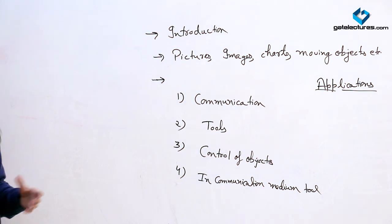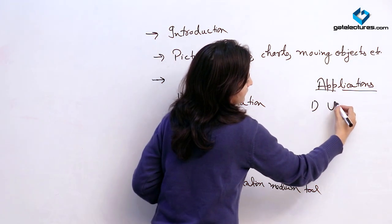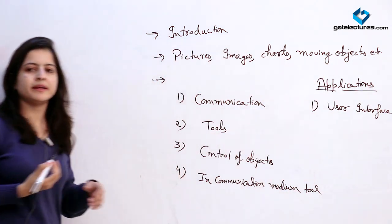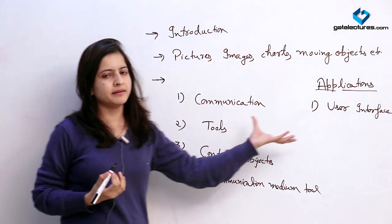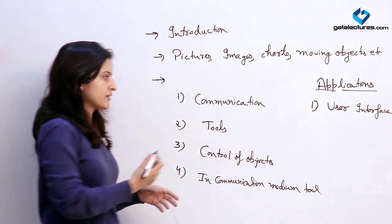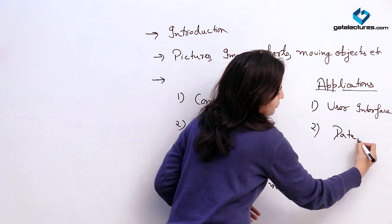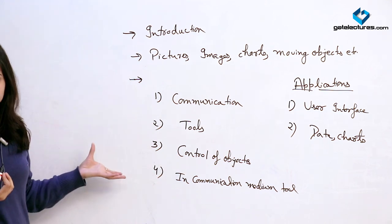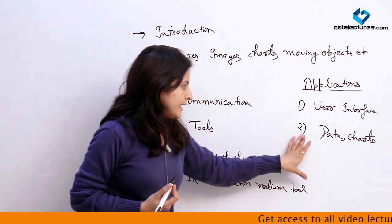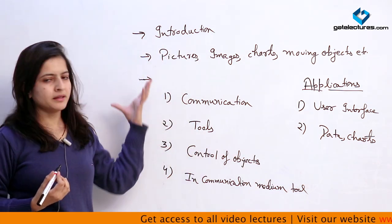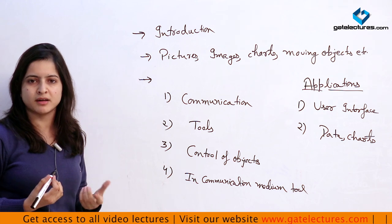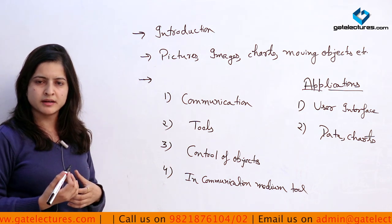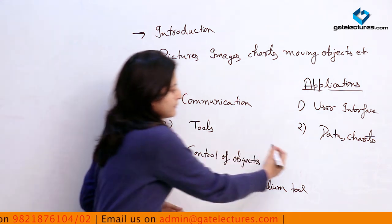When we are dealing with applications of computer graphics, the first and most important is user interface. As it is providing a communication channel between a user and a computer, it acts as an interface — this is the most important role which computer graphics plays. Secondly, for the representation of data, charts, and diagrams: how to represent the whole data with the help of charts. Like in elections, we can see that the whole data analysis is represented with the help of a pie chart or bar chart. This makes analysis easier for the user to understand.